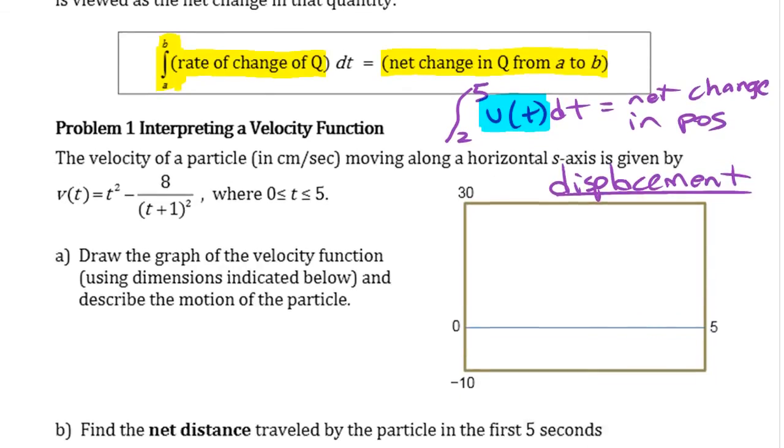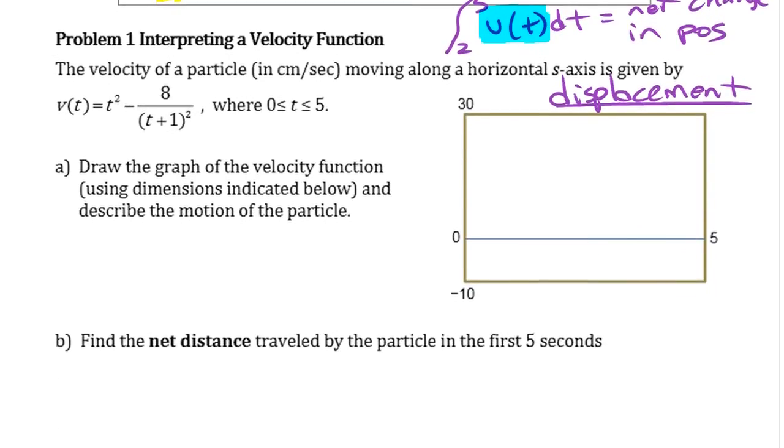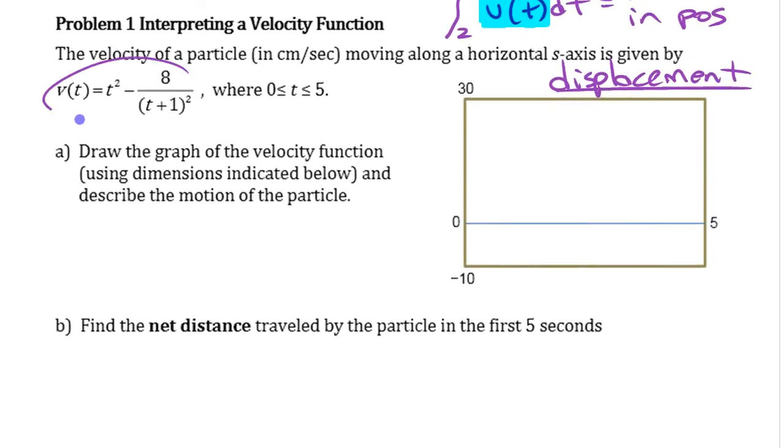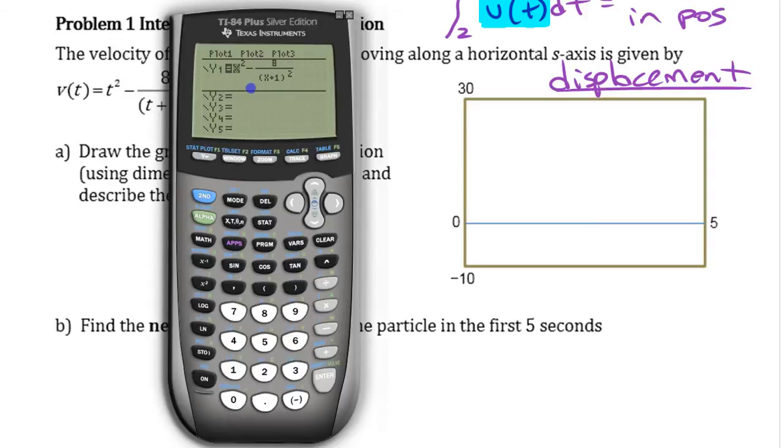So we're going to look at one specific example of that here using this velocity function. So it's some particle that's moving along an axis. To create a graph of that, we'll use technology. We'll start by using the graphing calculator, and then we can use computer software after. I've got this function already entered in here: x squared minus 8 over x plus 1 all squared. I've got the window set up to match this box over here.